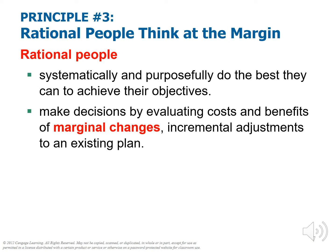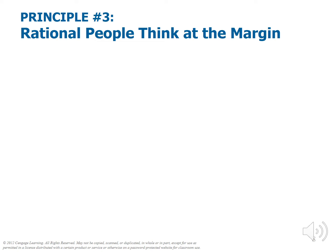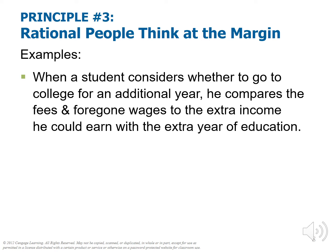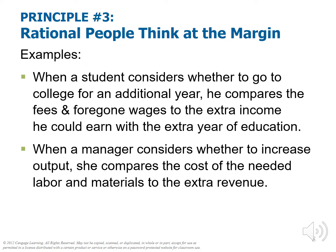We're assured that thinking about cost and benefit at the marginal level will lead us to maximizing totals — such as total pleasure and satisfaction, total profit, and total social well-being. When a student considers whether to go to college for one more year, he compares the fees and foregone wages — the opportunity cost — to the extra income that he or she might earn with an extra year of education over a lifetime. When a manager considers whether to increase output, she compares the cost of labor and materials to the extra revenue.